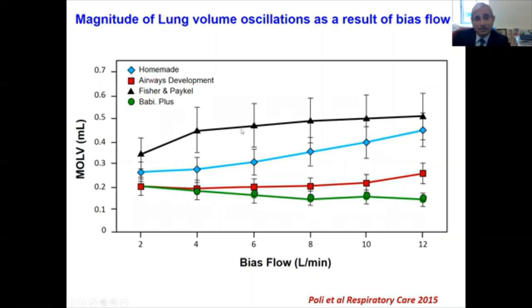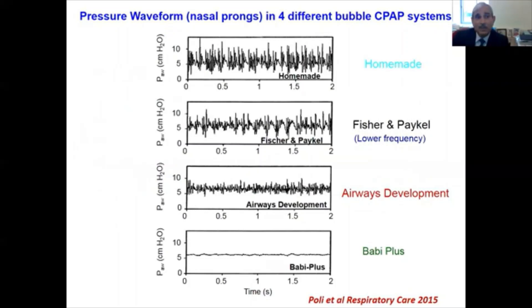In contrast, with the Babi Plus system at flows higher than 4 L/min, there was a decrease in oscillation. One reason is that the Airway Development and Babi Plus systems utilize a diffuser in their bottle, and that diffuser attenuates the oscillations and decreases the interaction between air and water. From this data, the Fisher-Pecal and homemade systems perform much better. Additionally, at flow rates over 8 liters per minute, the homemade and Fisher-Pecal systems generate second bandwidth frequencies at 54–76 Hz and 61–71 Hz respectively, which may promote enhanced lung recruitment.